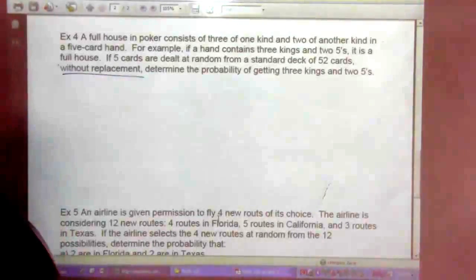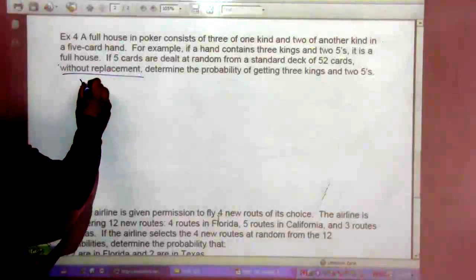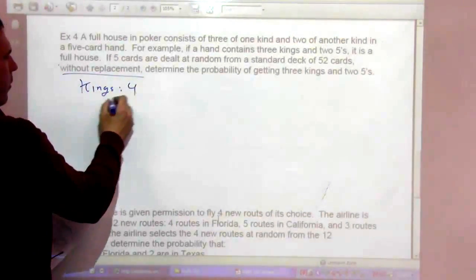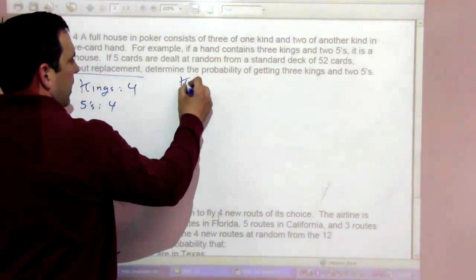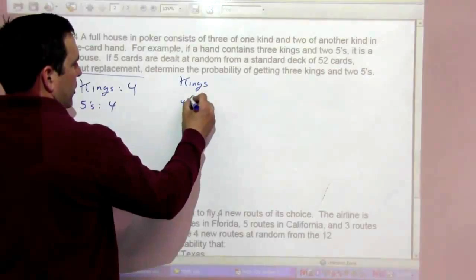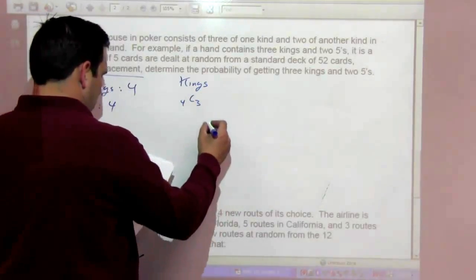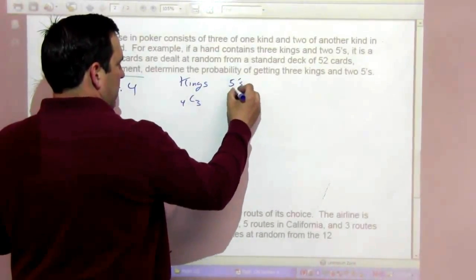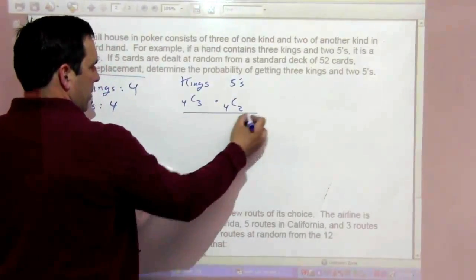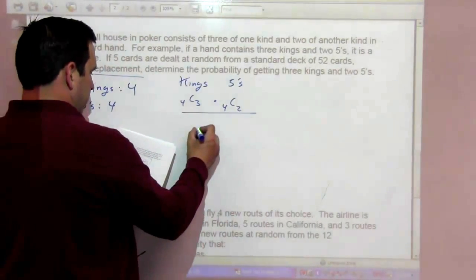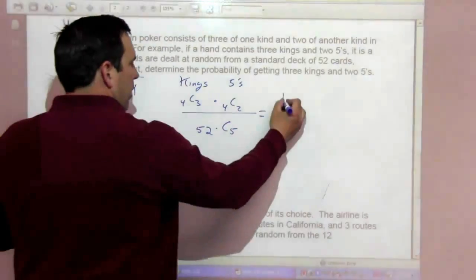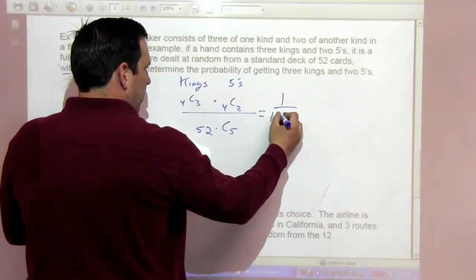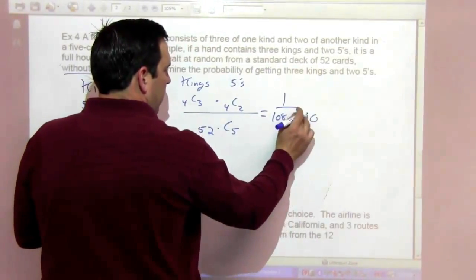So kings are 4, fives are also 4. So when we look at the kings part, it would be 4 choose 3. For the fives, 4 choose 2. We're going to multiply these divided by 52 choose 5. And that's going to be 1 over 108,290. Very unlikely hand.